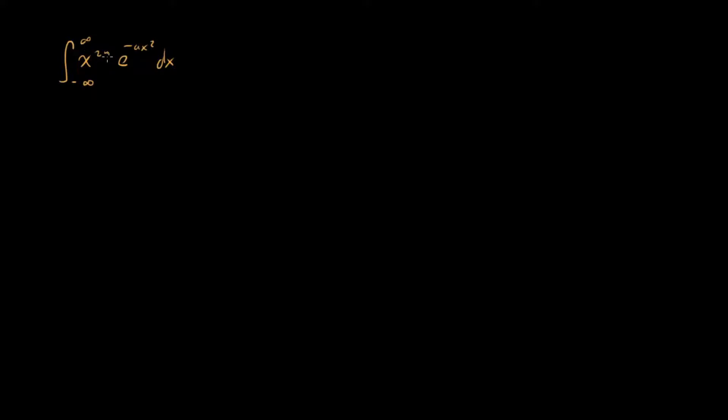The reason it has to be 2n and not just n is because for odd values of this argument, we have an odd function times an even function, which always equals zero. Because of that, the only cases that give us something non-zero are when we have an even number here — some even degree polynomial.